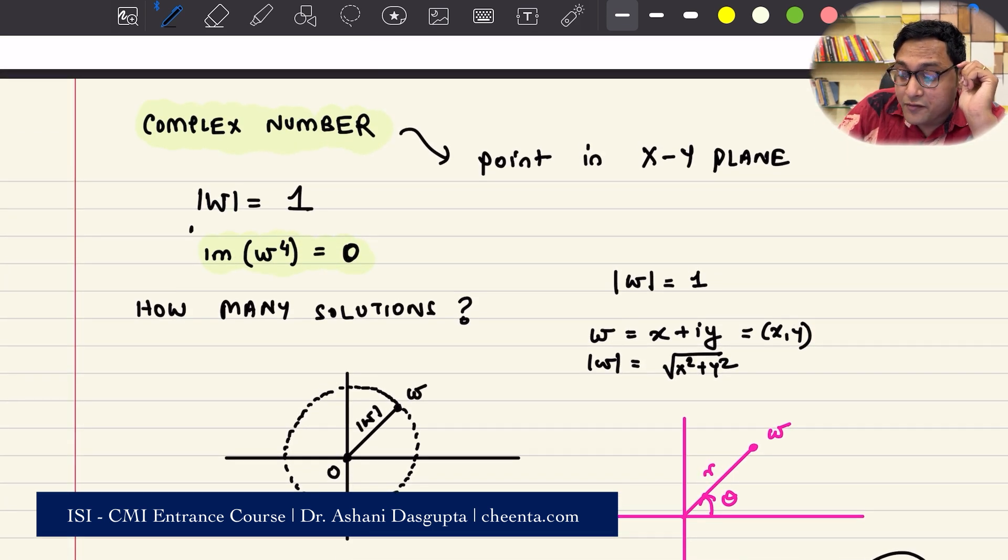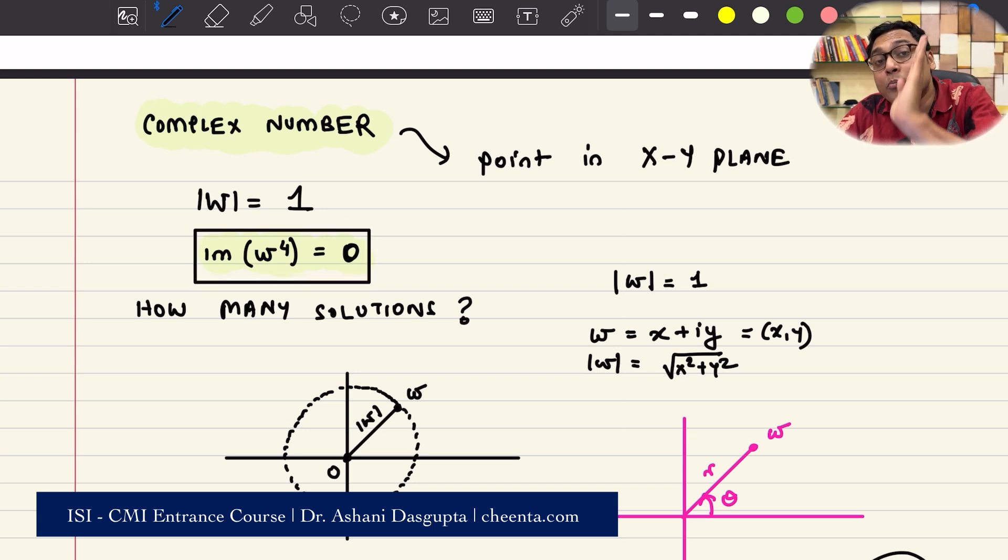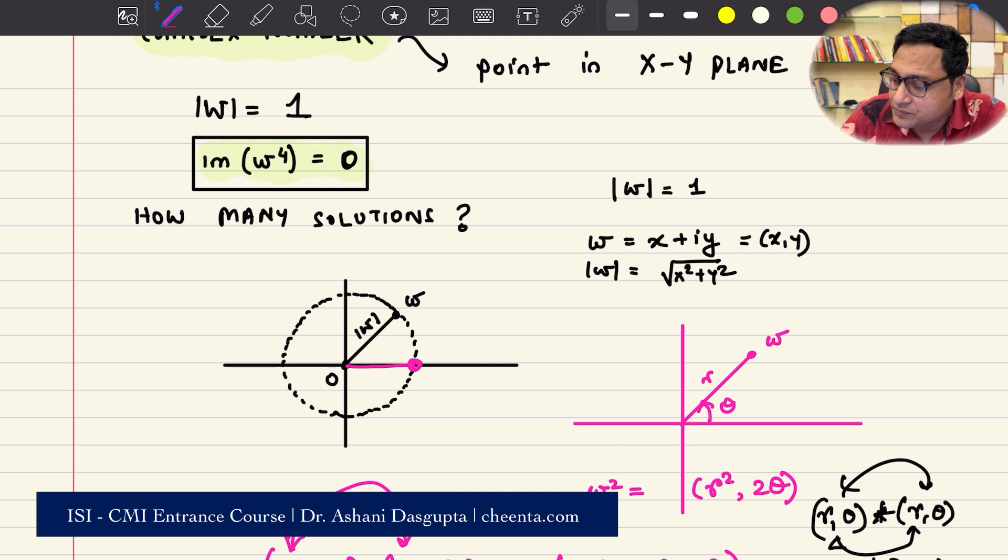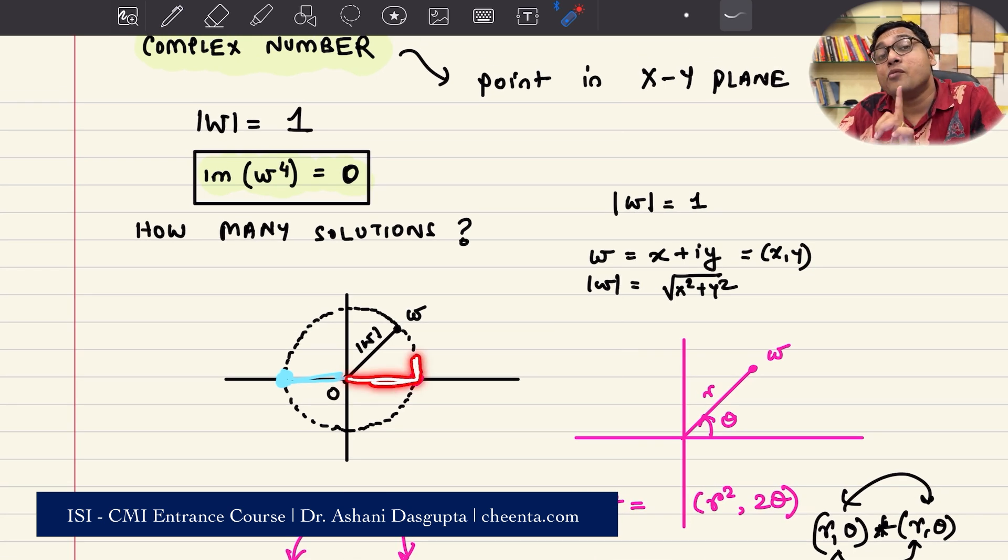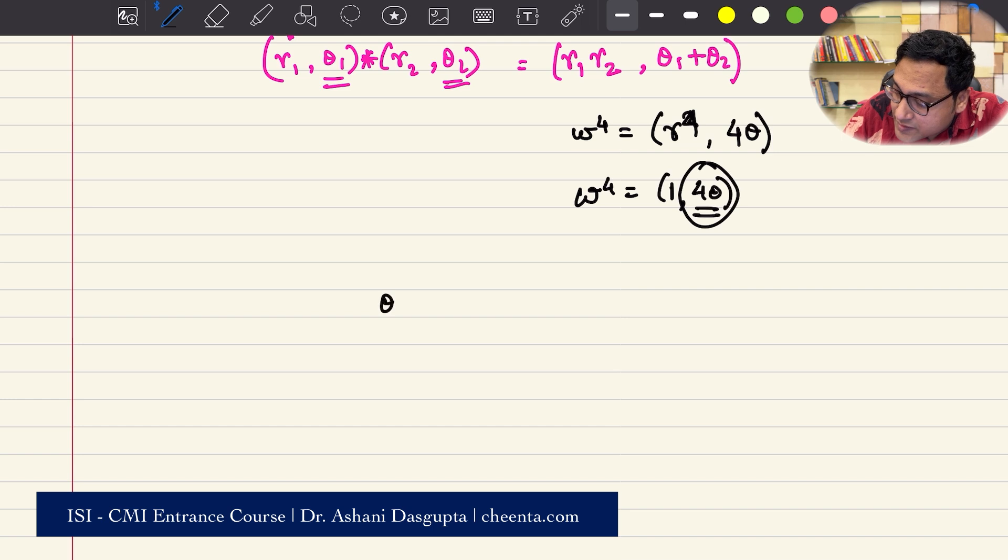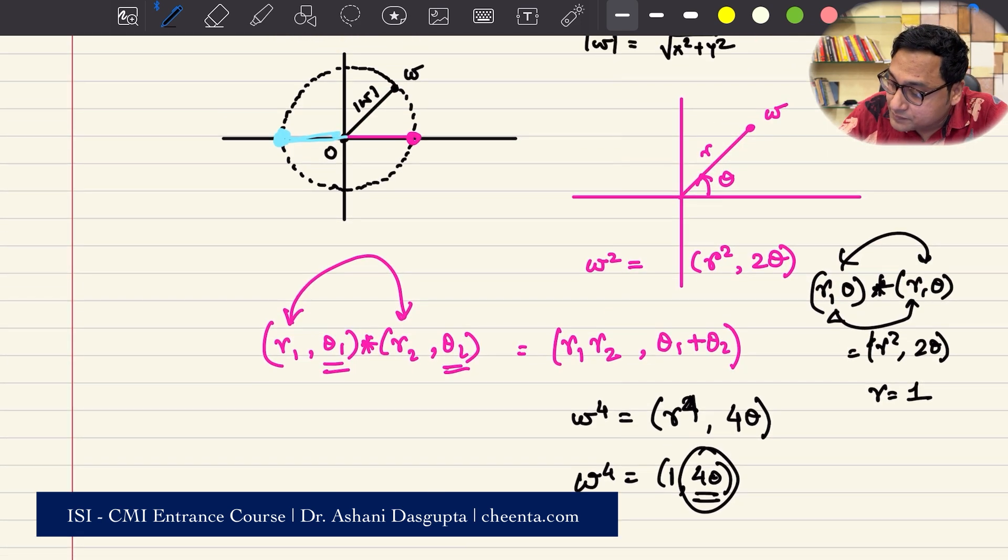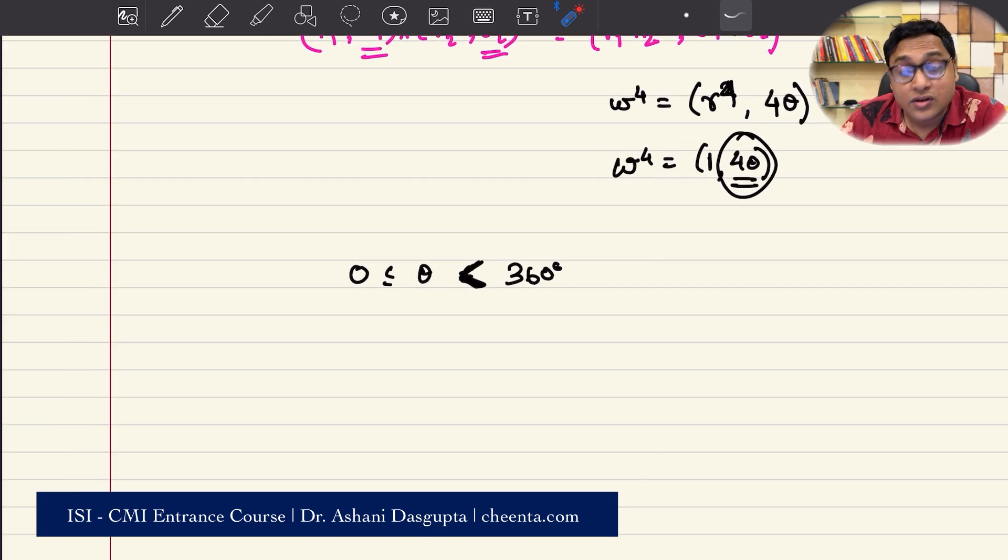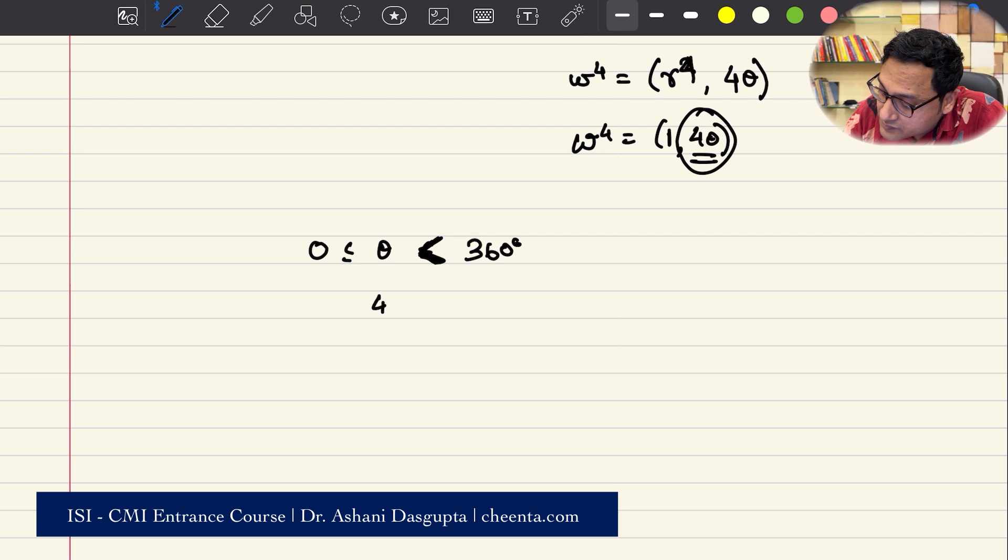And you want that angle to be either 0. You want imaginary part of omega to the power 4 to be 0, so you don't want any y component of omega to the power 4. What you want is you want omega to the power 4 to be either here or you want omega to the power 4 to be here. These are the two positions. In these two positions, the imaginary part, the y component is 0. Let's do some calculations. We know that theta is between 0 and 360 degree, no equality sign. This angle that omega makes with x-axis is from 0 to 360.